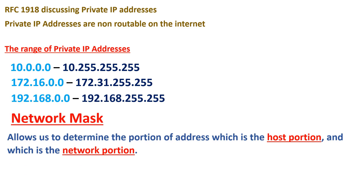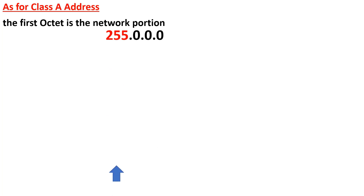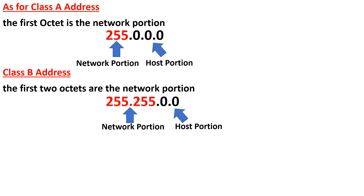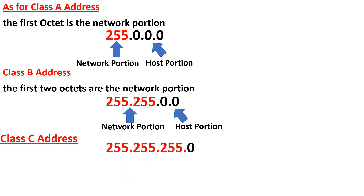The network mask allows us to determine which portion of the address is the host portion and which is the network portion. For class A addresses, the subnet mask shows us that the first octet is the network portion — for example, 255.0.0.0. This shows us that the first octet of 255 is our network portion, and the other three octets are our host portion. For class B, the first two octets are our network portion and the other two octets are our host portion. For class C, the first three octets are our network portion and the last octet is the host portion.